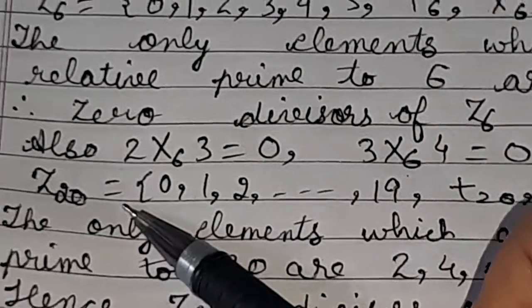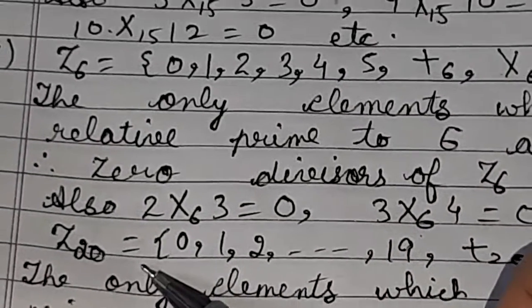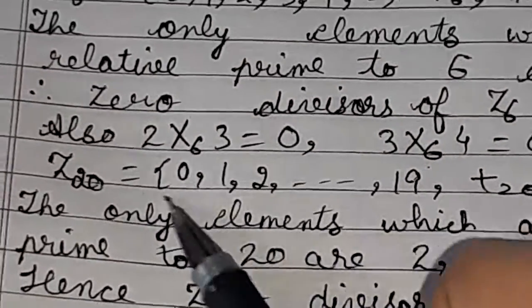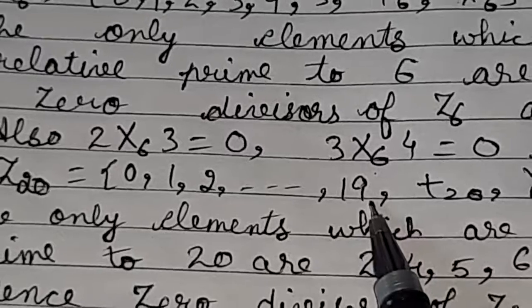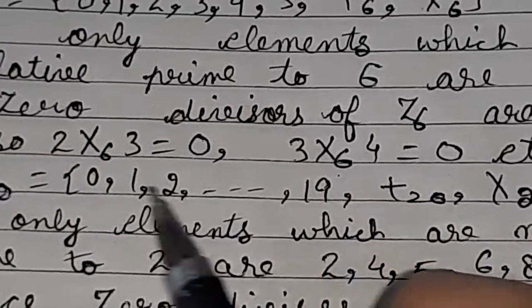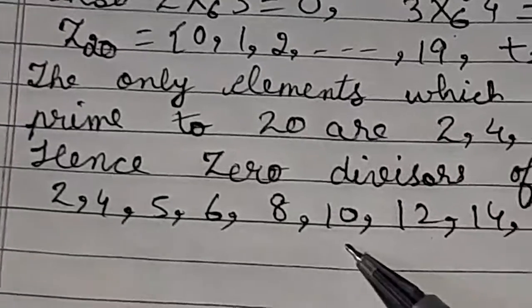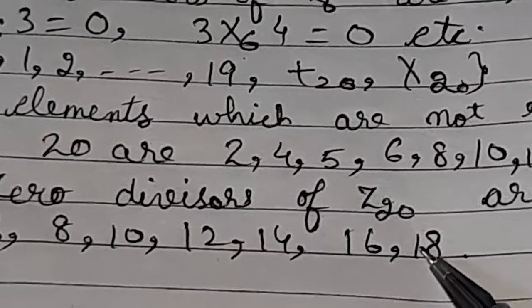And next z20, here we have to find those elements which are those elements from here 0 till 19 which are not relatively prime with 20. And they are 2, 4, 5, 6, 8, 10, 12, 14, 16 and 18.